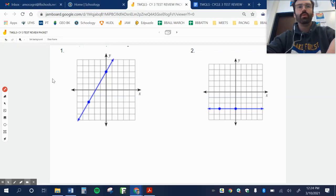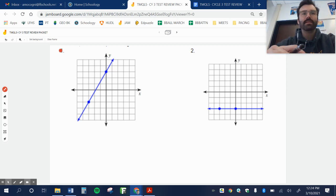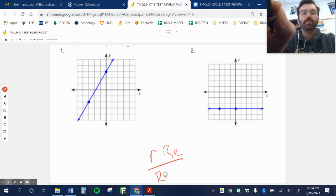All right, here we go. We'll start with number one and two. We're talking about the slope. Find the slope of this line. Remember, slope is rise over run.